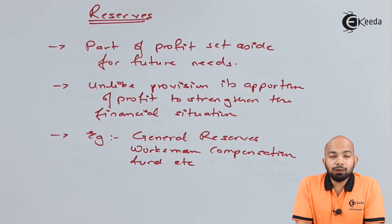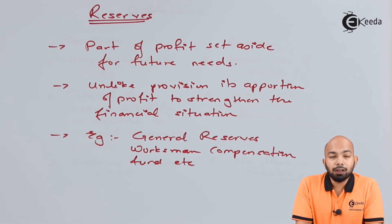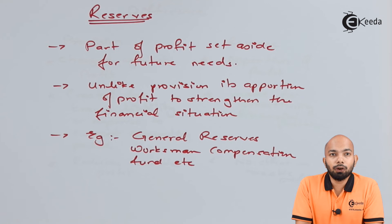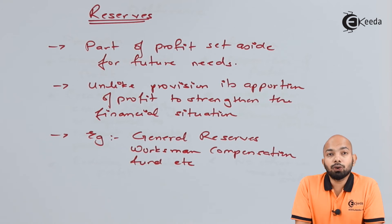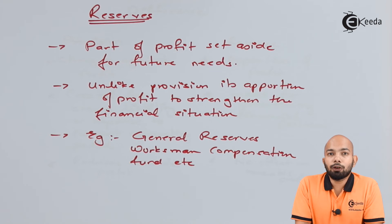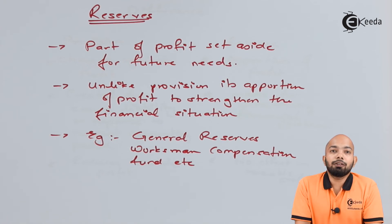When we speak about reserves, reserves are nothing but a part of the profit that has been set aside. It is an apportionment of profit. Reserves are not a reduction to profit — you are dividing the profit into different parts, but it is still a part of the profit itself. It will be shown on the liability side under the capital part. However, there is no reduction in or charge against the profit and loss account.